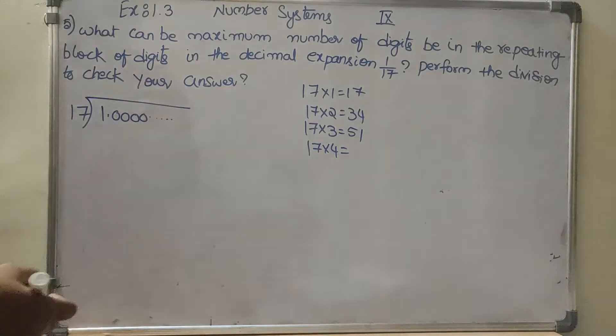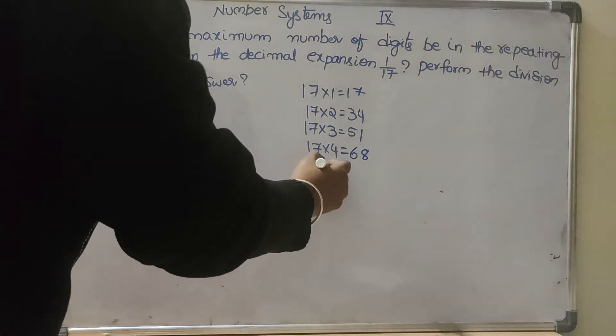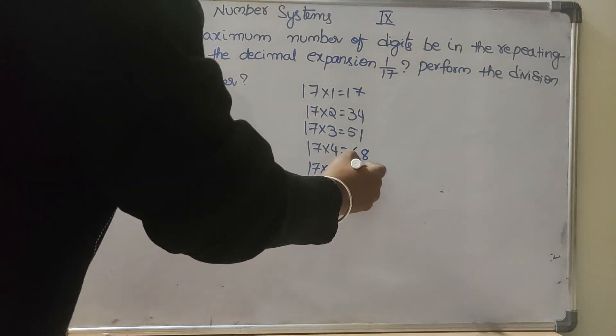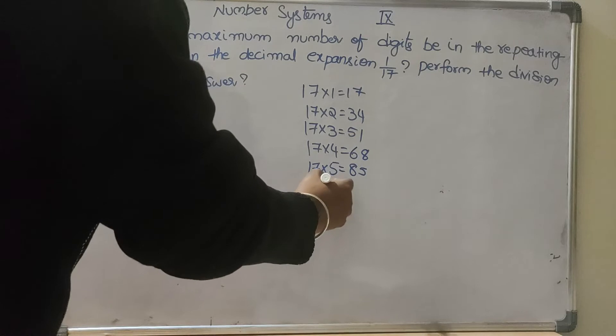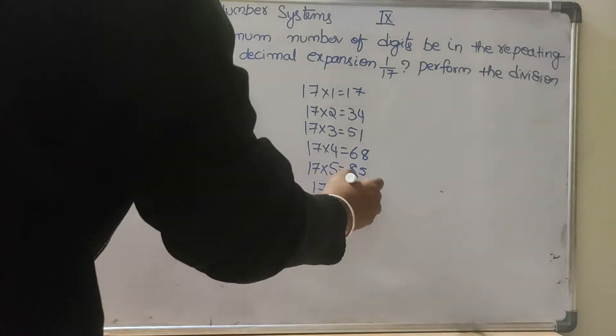17 fours are 68, 17 fives are 85, 17 sixes are 102.